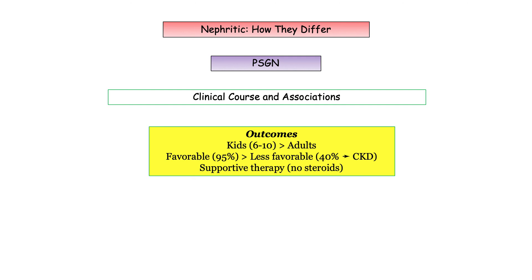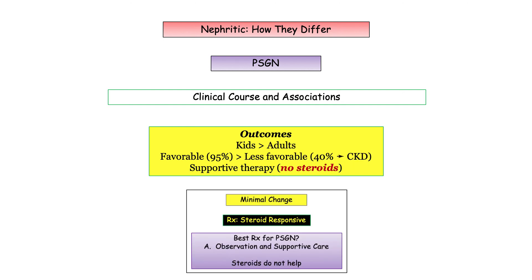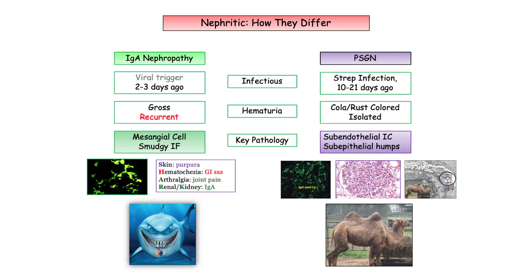Supportive therapy is generally all that is required. To emphasize: steroids play no role in treatment of post-streptococcal glomerulonephritis. Whereas minimal change disease does benefit from steroid therapy, it plays no role here. And that will do it for these two players.